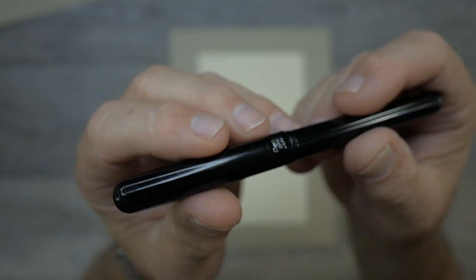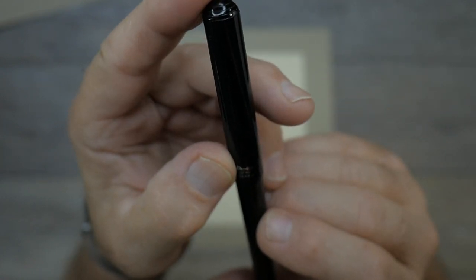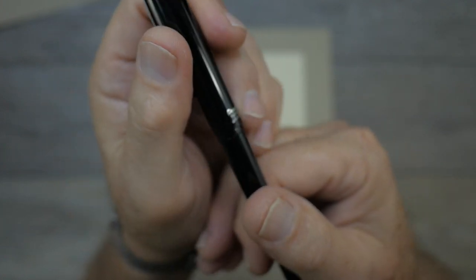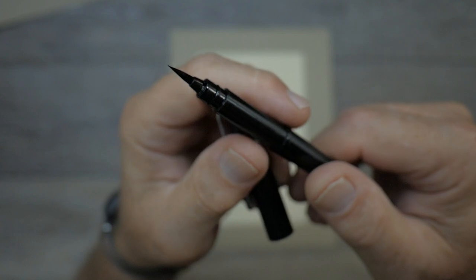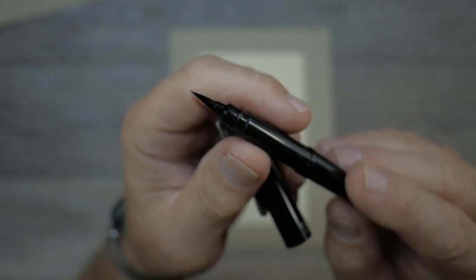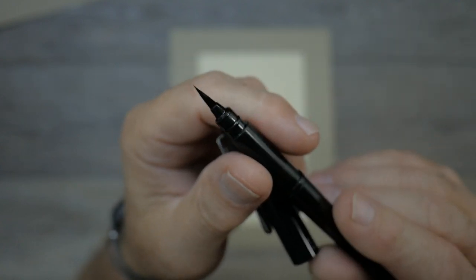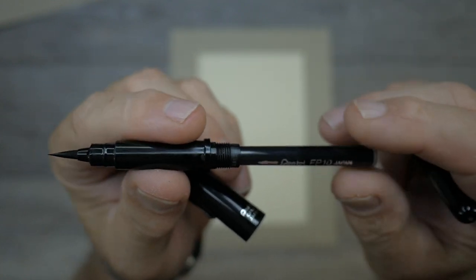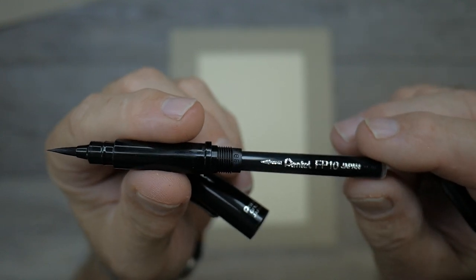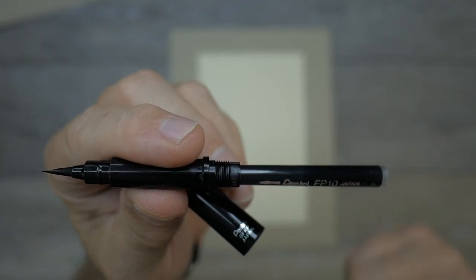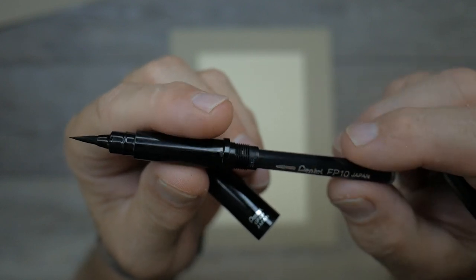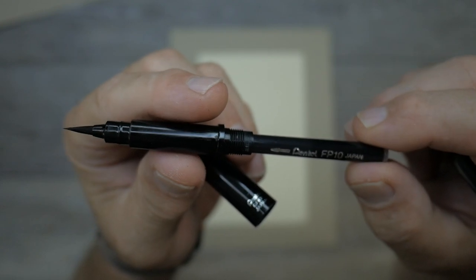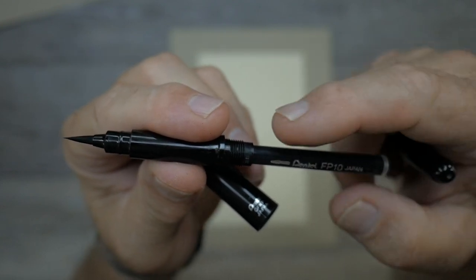This is the Pentel brush pen and it's known by model number GFKP on the cap here. The cap pulls off with a kind of a click. It has a synthetic fiber brush tip that's very flexible and it's fed from a cartridge system that's very similar to a fountain pen cartridge.